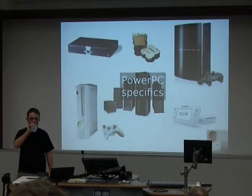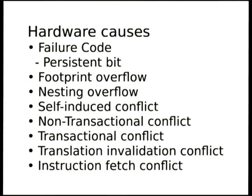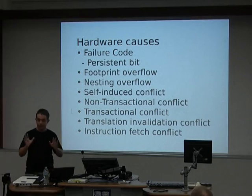PowerPC specifics. We have the Transaction Exception and Summary Register for abort codes. There's a failure code with a persistent bit — a best guess by the hardware saying it thinks this is persistent and if you try again it won't work. There's footprint overflow, nesting overflow, and self-induced overflow if you did something like a pause. There are non-transactional and transactional conflicts: a non-transactional conflict means you conflicted with someone who's fallen back to locking and running non-transactionally; a transactional conflict means someone running transactionally like you.